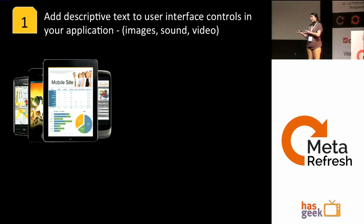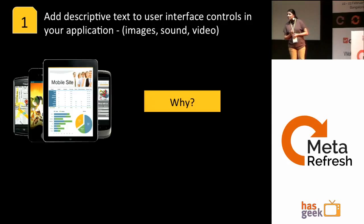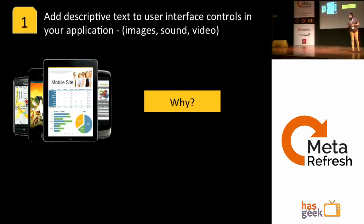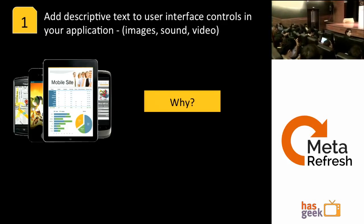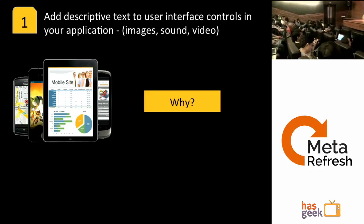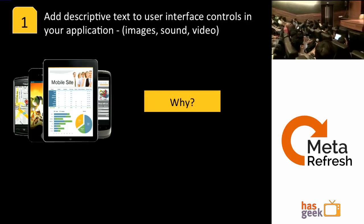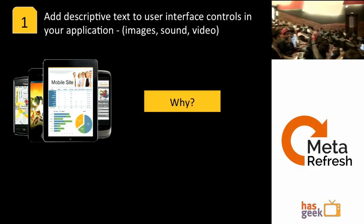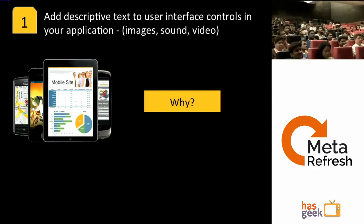Why do we need alternate text? Content should not be lost. Screen readers can read the content in case images are not loaded. Having alt tags helps with that. The challenge is that not all users can read information if it is in the form of images, objects, or dynamic content — so all these things should have alternate and descriptive text.